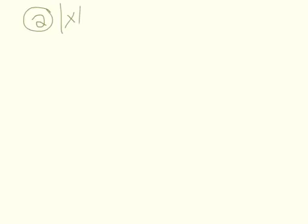I'm going to give you another type that is a special case. Think about the absolute value of x equals negative three. What can you possibly put in for x to get negative three when you take the absolute value? There's no possible value — this is a no solution. If you ever see something where you have absolute value bars equal to a negative, it's always going to be no solution. That's a special case for these types of problems.